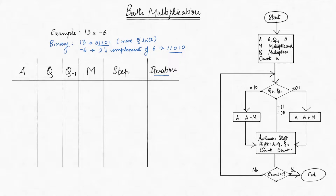We will have a table with 6 columns. M and Q are the registers containing the multiplicand and multiplier, that is 13 and -6 respectively. A and Q'-1 are registers used for shifting the bits in the iterations of the algorithm. The step column shows the process in the current iteration. Let's fill the values we know in the first row. A and Q'-1 are always empty registers at the start, so we set them as 0.